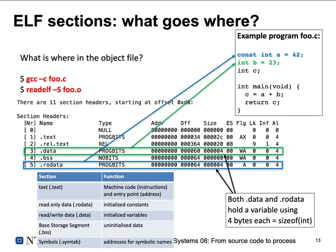Let's look at what is where in our object file with an example, foo.c. This has a const integer initialized to 42, a regular integer initialized to 23, and an uninitialized integer. Looking at the readelf dump for this object file generated with gcc: the .data segment is exactly 4 bytes (holding variable b), the read-only data section is also 4 bytes (holding the const integer a), and the uninitialized int c is a BSS variable — BSS has no size in the file because it's allocated later.